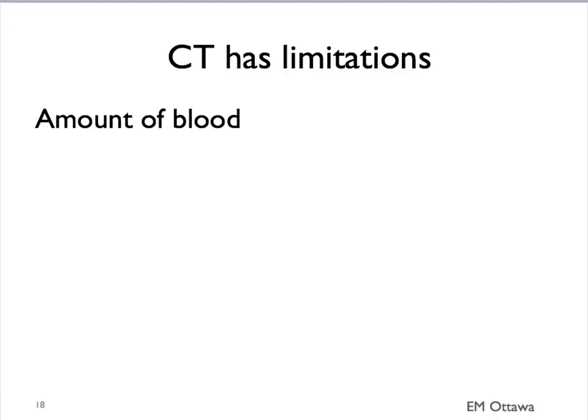The second limitation has to do with the amount of blood. When the amount of blood is quite small, it is simply very difficult to see on CT. This is especially relevant in patients with subarachnoid bleeding from aneurysms.